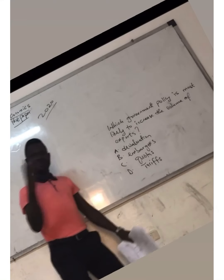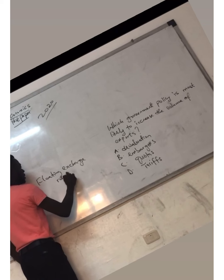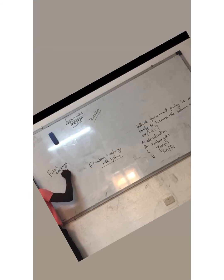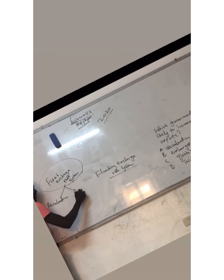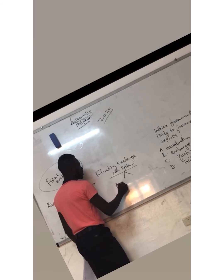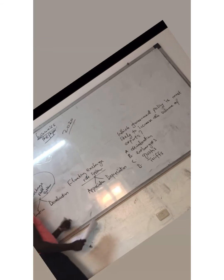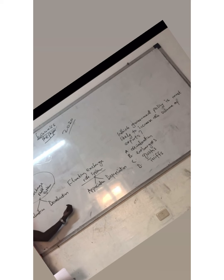We talked about devaluation. In the fixed exchange rate, we have the floating exchange rate system and fixed exchange rate system. Here we have revaluation and devaluation. The floating exchange rate is where we have appreciation and depreciation. We talked about revaluation and devaluation — this is done strictly by the government of the country and the central bank, that's the central bank of Libya and the government of Libya. They are the ones that can devalue or revalue the currency.